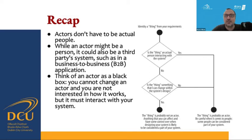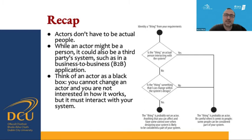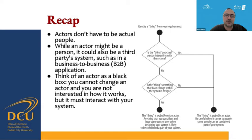To identify actors, we first identify a thing from the requirements and check whether it is an actual person interacting with the system. If yes, it is probably an actor. We then check whether that thing is something we can change within the system's design — if no, the thing is ultimately an actor. People can sometimes be considered part of the system. If a thing can change with the system design and you have control over it when designing, it is likely part of the system rather than an actor. This challenge is usually addressed through stakeholder meetings and discussions.